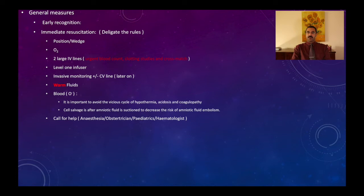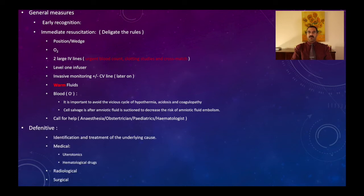Use O-negative blood if required and activate the major obstetric hemorrhage code, which involves the blood bank, hematologist, senior anesthetist, senior obstetrician, and pediatrician. Focus on breaking the vicious cycle of hypothermia, acidosis, hyperkalemia, and coagulopathy. Cell salvage is a good option after amniotic fluid suction using a leucocyte depletion filter. Definitive treatment involves identifying the cause, medical treatment with uterotonic and hematological drugs, radiological, and surgical intervention.